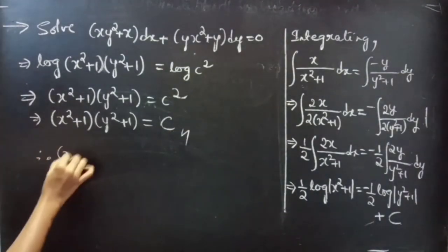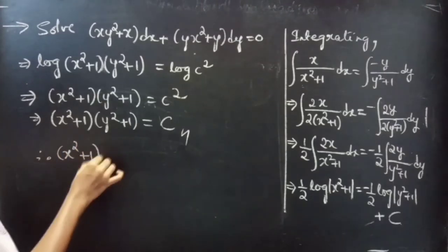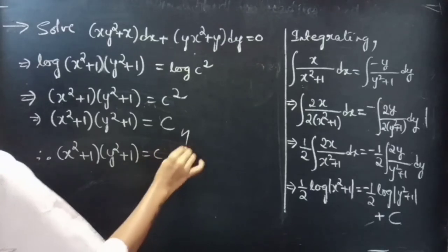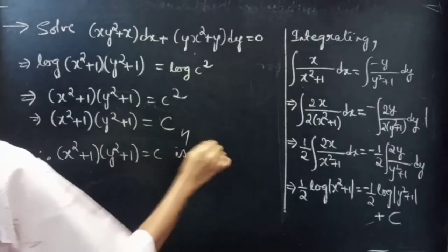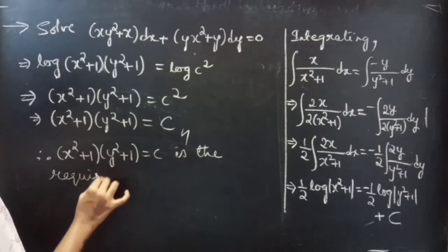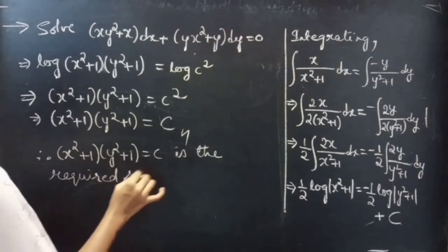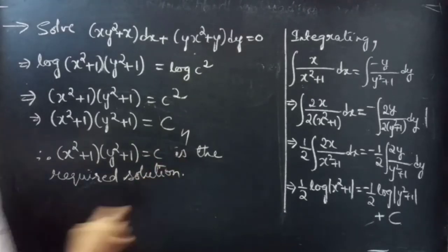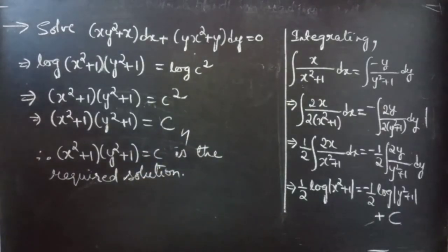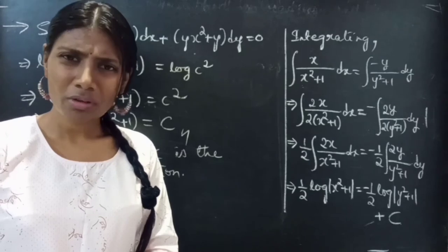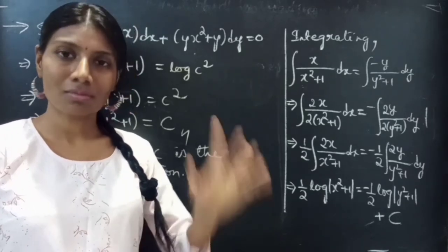Therefore, (x² + 1)(y² + 1) = c is the required solution for the given differential equation. This completes the problem. We have seen a problem from differential equations in this video. Hope you understand. We will see you in the next video. Bye-bye.